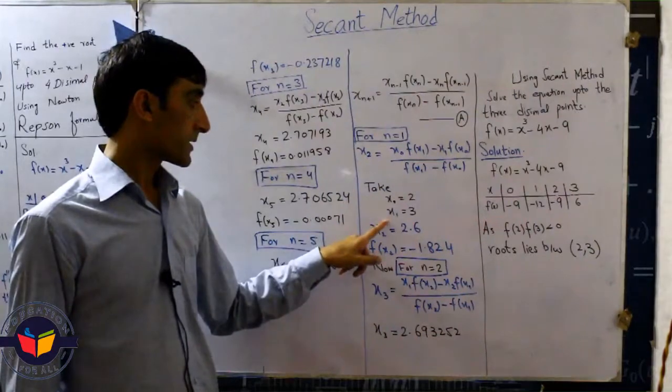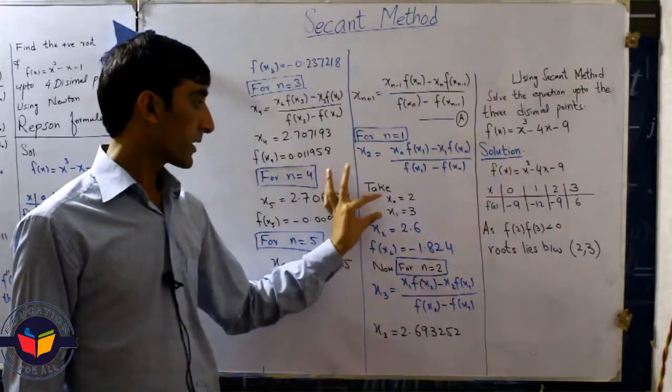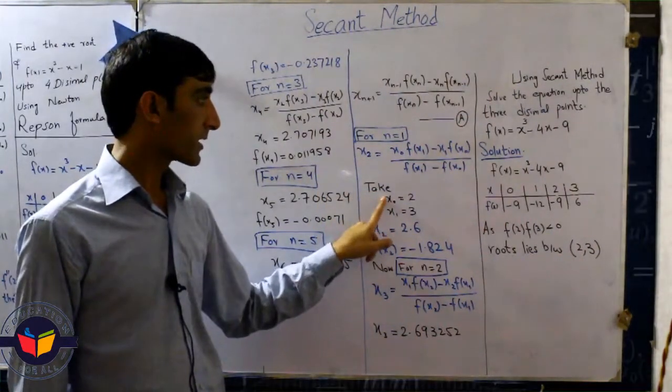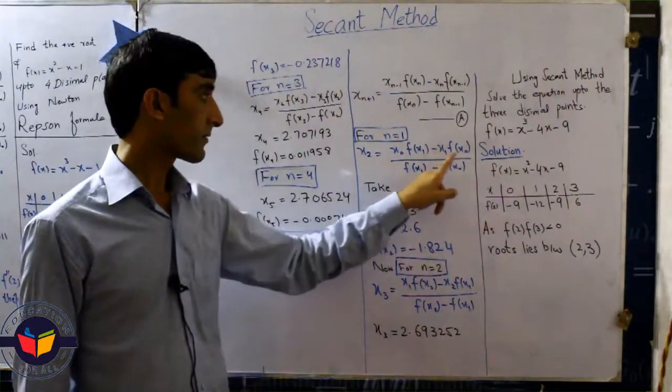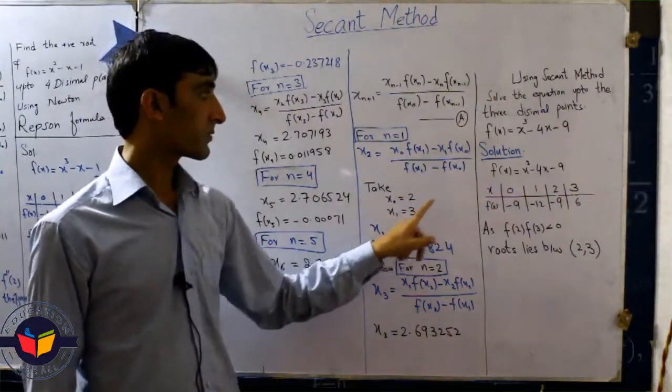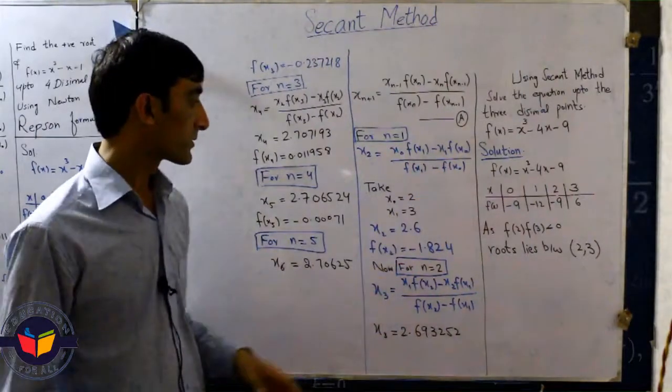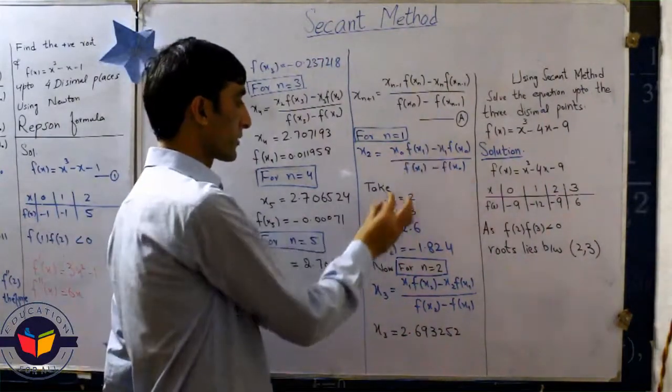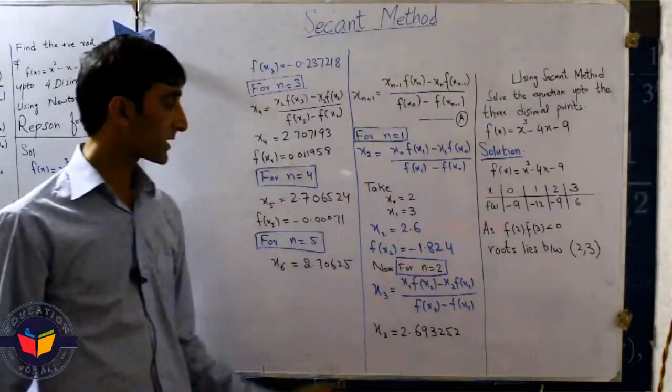Now this one is x0 and x1, and we substitute x0 in this function and we get f of x0. Similarly we substitute x1 and get f of x1. Substituting all of these values we calculate x2 that is 2.6.